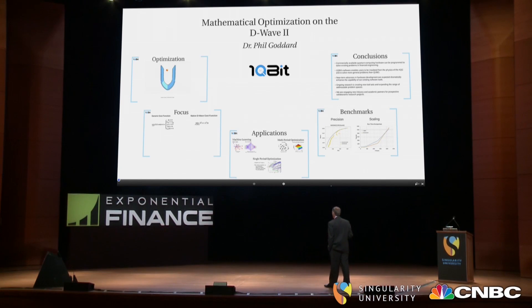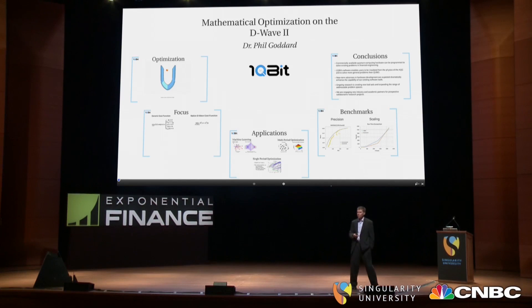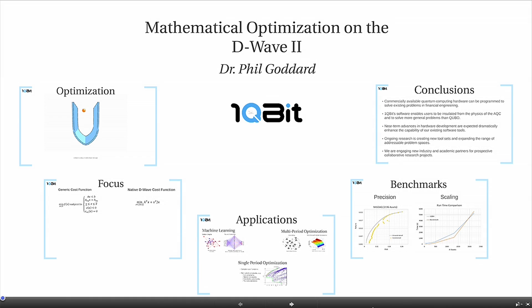I'm even going to throw a couple of mathematical equations at you — I apologize for that in advance. I certainly don't expect anybody here to be mathematicians or physicists, even though many of you might be. What I'm going to do is start off by talking about generic optimization problems, where they fit into the use of the D-Wave machine, and then talk about various applications that we look at at OneQBit and help various of our industry partners solve.